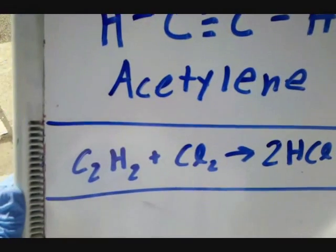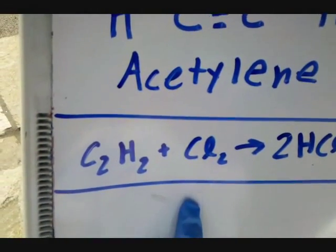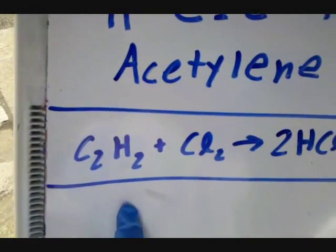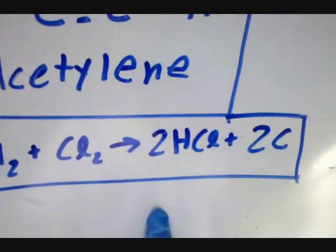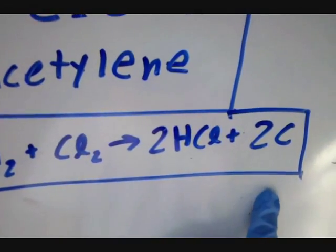Dehydrogenation is a reaction where you take the hydrogen atoms off of the molecule. The reaction is seen here: chlorine gas meets acetylene gas, and the products are hydrogen chloride and carbon.